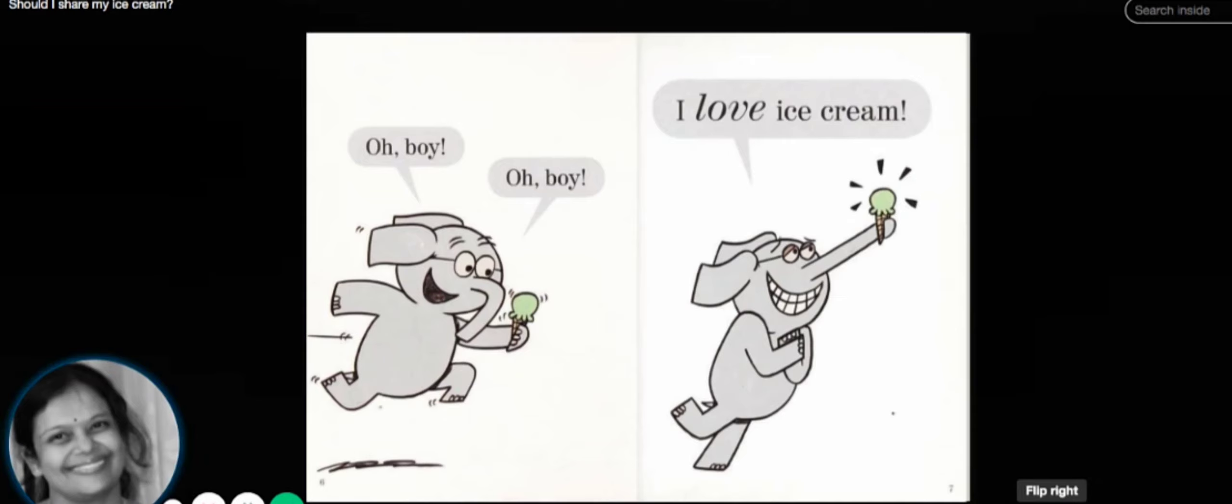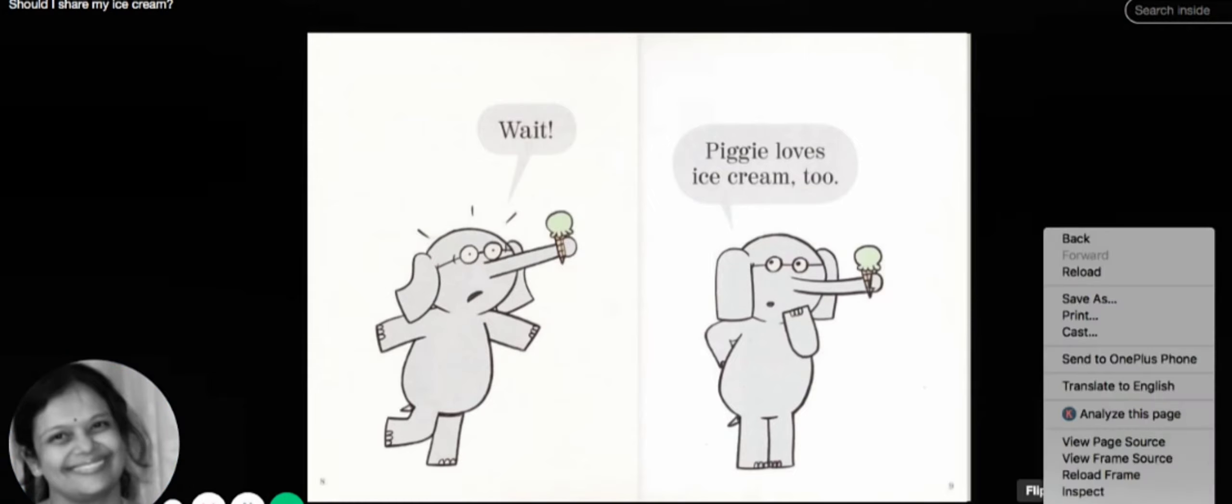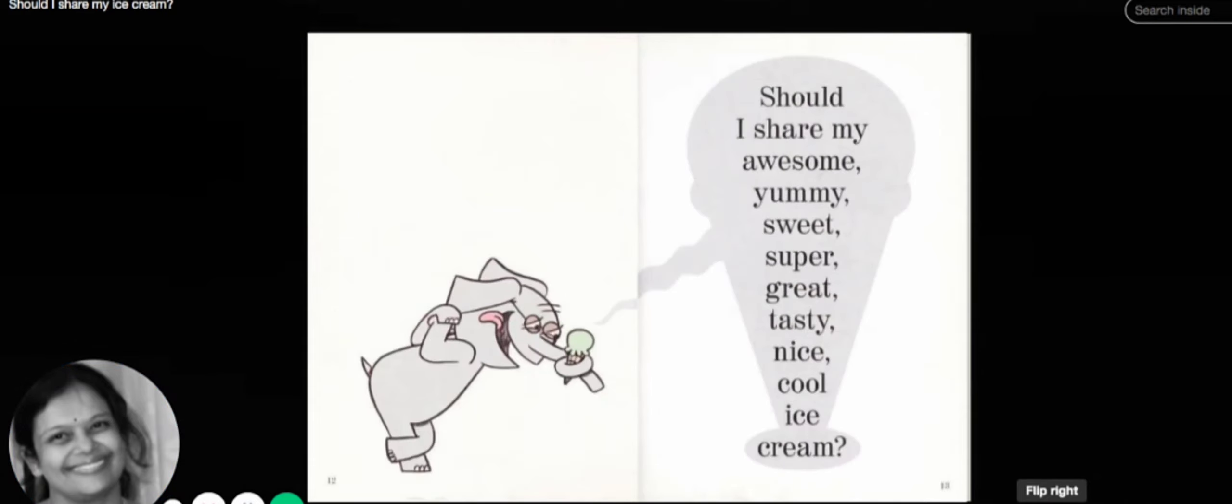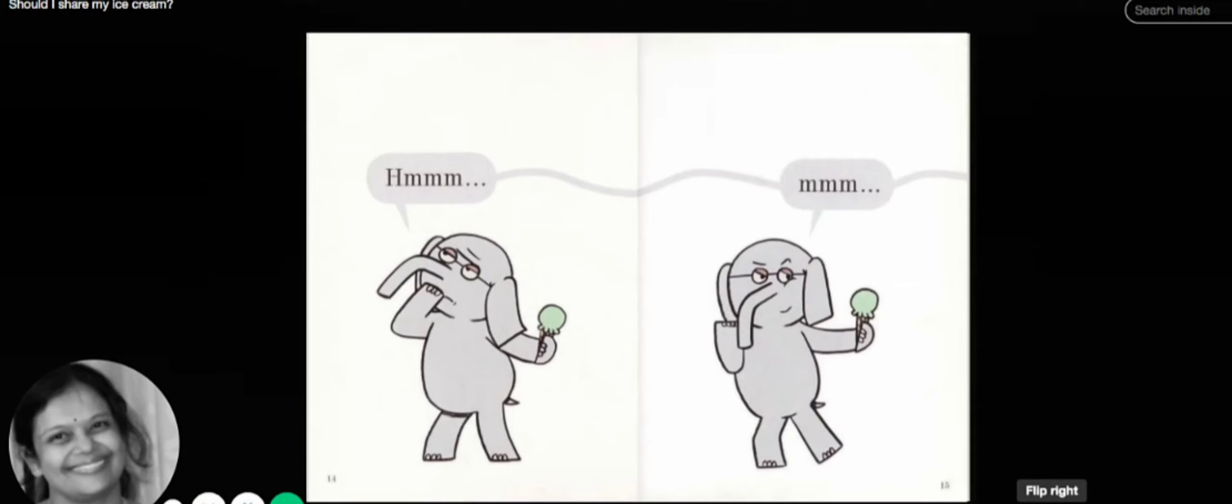He says, 'I love ice cream! I'm going to eat it up. Wait—Piggy, my friend, loves ice cream too. What should I do? Piggy is my best friend. Should I share my ice cream with her? Should I share my awesome, yummy, sweet, super great, tasty, nice, cool ice cream with her? Hmm, should I share?'